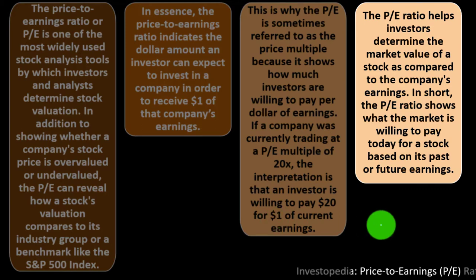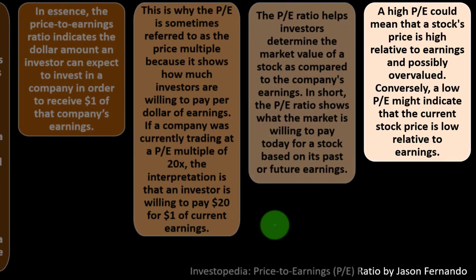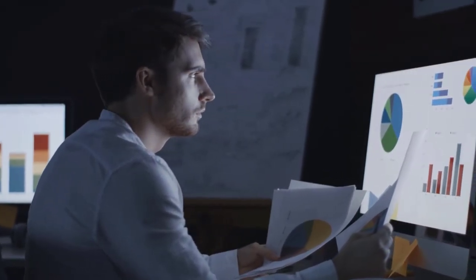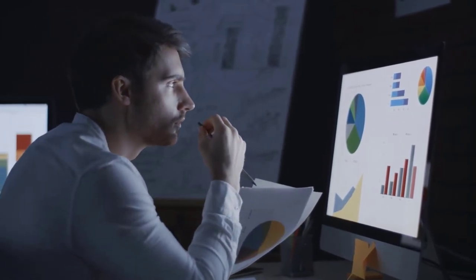The PE ratio helps investors determine the market value of a stock compared to the company's earnings. In short, the PE shows what the market is willing to pay today for a stock based on its past or future earnings. A high PE could mean that a stock's price is high relative to earnings and possibly overvalued — the price is many multiples of earnings. A lower PE may represent better valuation, though you'd still need to compare it to other stocks within the sector and indexes.